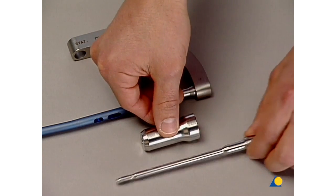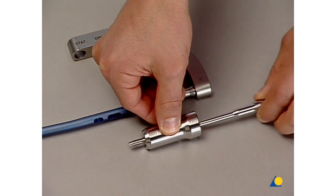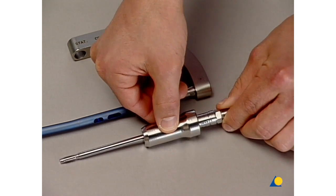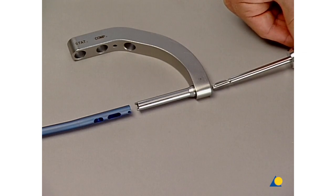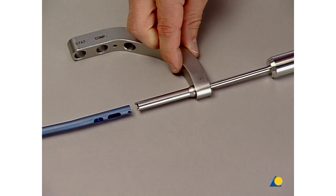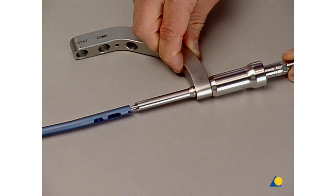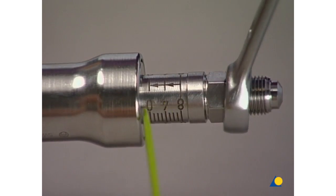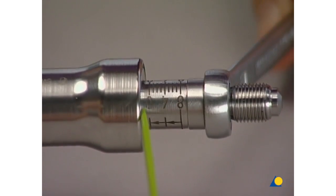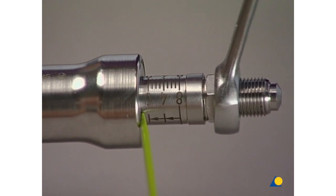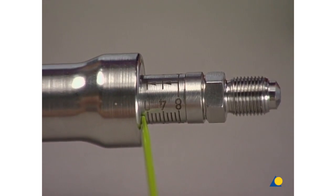Before inserting the UHN, the compression device has to be mounted onto the insertion handle, replacing the connecting screw used for standard nail insertion. The end of the compression device shows a scale indicating the number of millimeters of fracture gap that can be compressed by tightening the compression connecting screw.